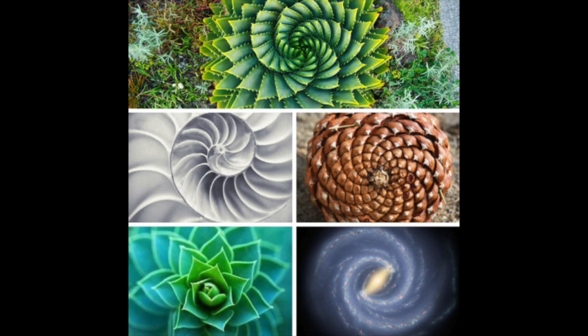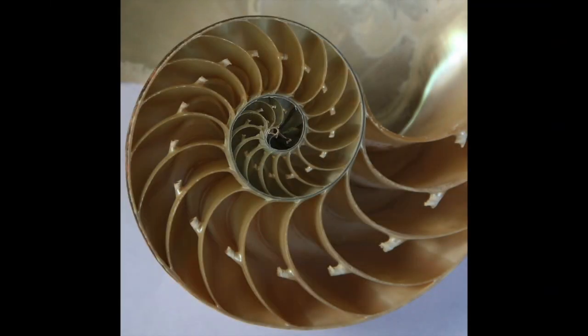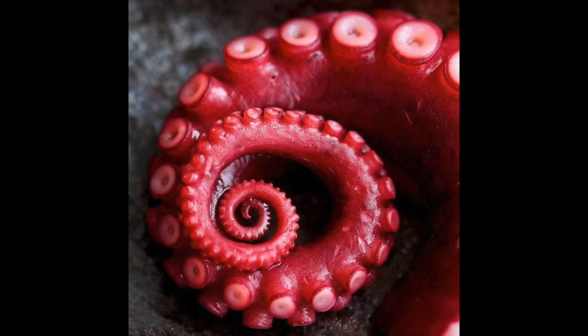Fractals are found everywhere in nature and math. Fractals are patterns that repeat forever — they are created by repeating a simple process over and over again. You see the inside of the shell: there's a shape in the center that repeats over and over again. It starts out small in the center, but that same shape repeats and gets larger and larger while remaining the same shape. That's what makes it a fractal.